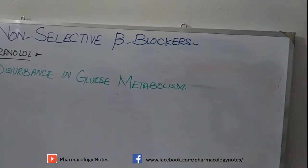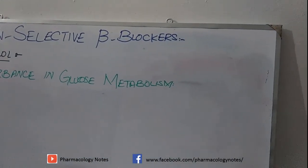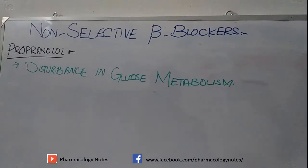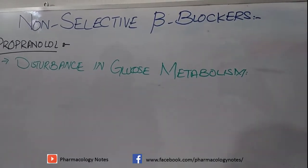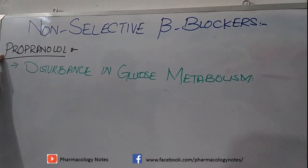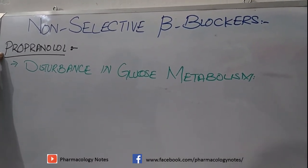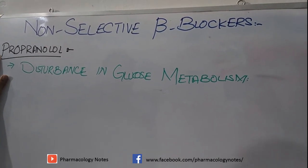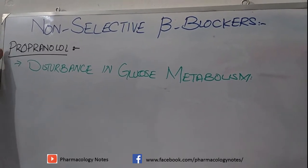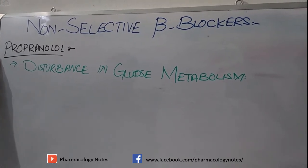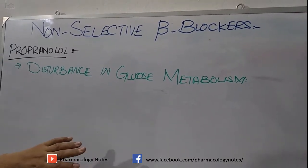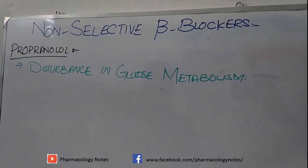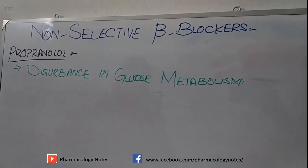Today's topic is non-selective beta blockers. As discussed in the last lecture, propranolol decreases cardiac output, causes negative chronotropic and negative inotropic action, and diminishes the activity of the SA node and AV node, thus it is used in cardiac arrhythmias. Propranolol also decreases blood supply to the peripheries, GIT, skin, juxtaglomerular apparatus, and skeletal muscles.